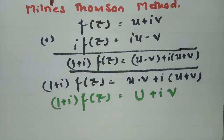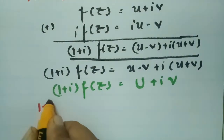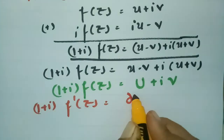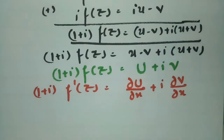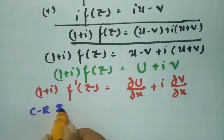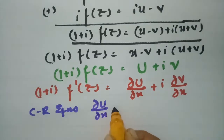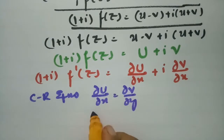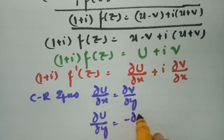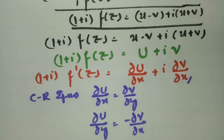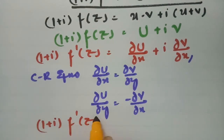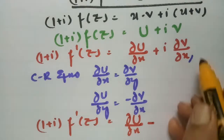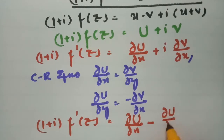If I make a derivative with respect to x, then (1 + i)·f'(z) equals ∂U/∂x plus i times ∂V/∂x. Now using the Cauchy-Riemann equations: U_x equals V_y, and U_y equals minus V_x. So in place of ∂V/∂x I am writing minus ∂U/∂y. This gives (1 + i)·f'(z) equals ∂U/∂x minus i times ∂U/∂y.